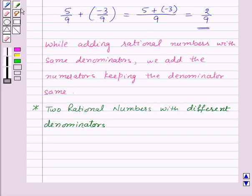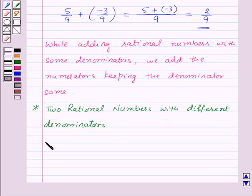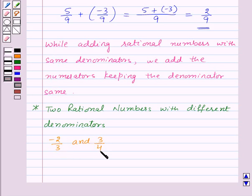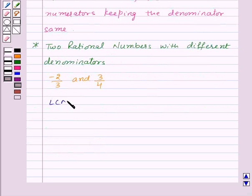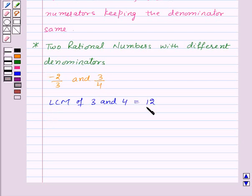Now let's see how to add two rational numbers with different denominators. Let us add minus 2 by 3 and 3 by 4. Here the denominators are different, so first of all we will express these two rational numbers with the same denominator. We will take the LCM of 3 and 4, which is equal to 12, and express both rational numbers with denominator 12.